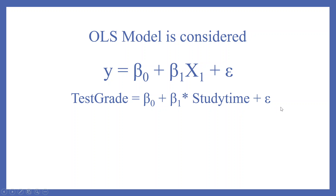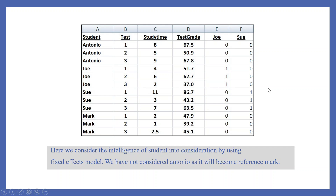Now let's extend this example further. We want to see the effect of the student also, so we will create dummies for the student. Remember, the number of dummies will be equal to the number of students minus one. We do this to avoid the dummy variable trap.